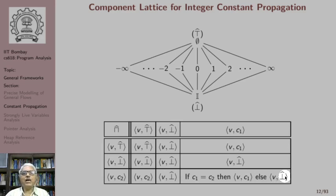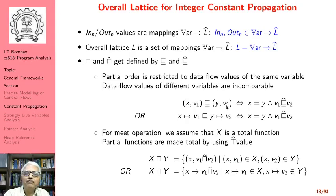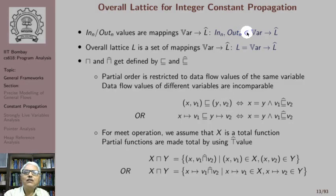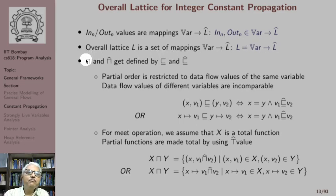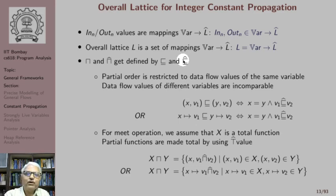Note that here we are showing a map from variables to values. In-out values are mappings — in and out are mappings in the set of all possible mappings from var to L. The overall lattice is a set of mappings, which is all possible mappings from var to L. The overall meet and the component meet for one variable, and the partial order — overall and component — are defined by each other.